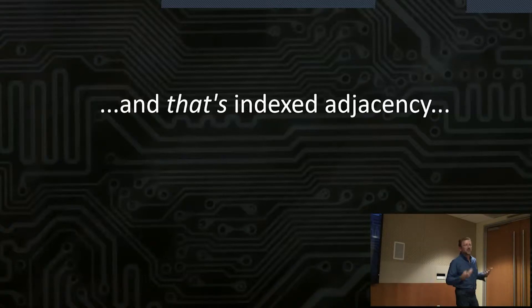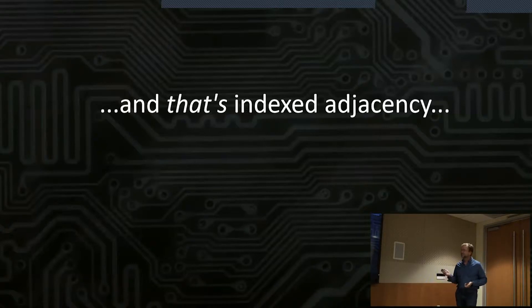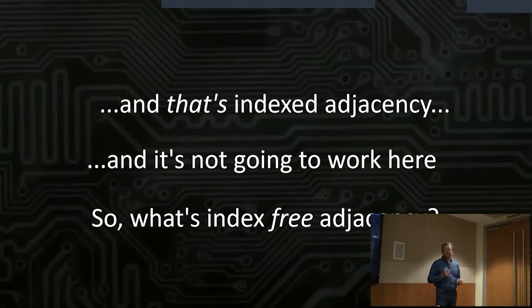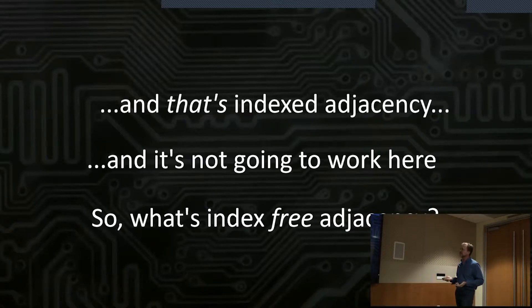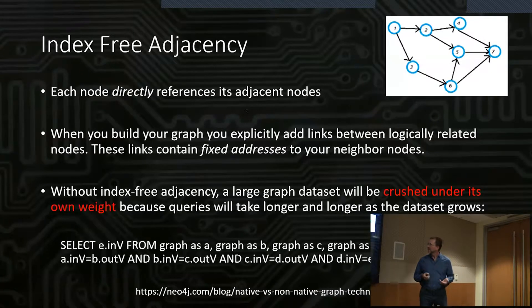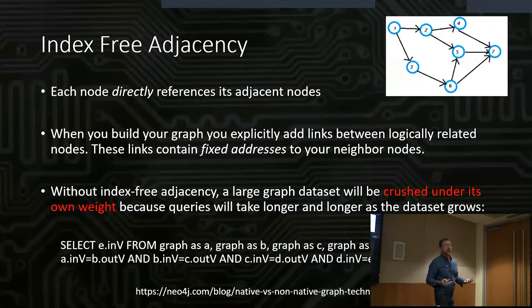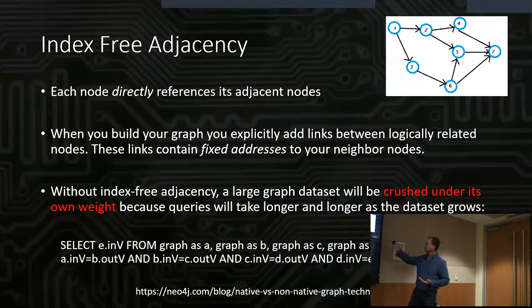That's what we call indexed adjacency — leveraging these indexes to bring tables together to find relational adjacencies. But it's not going to work here, and I'll tell you why. Index-free adjacency is where a node points directly to its related nodes. Going back to our diagram, this was originally intended as just a logical diagram, but we can think of it as a physical diagram because node 6 will directly point to node 5 and node 7.